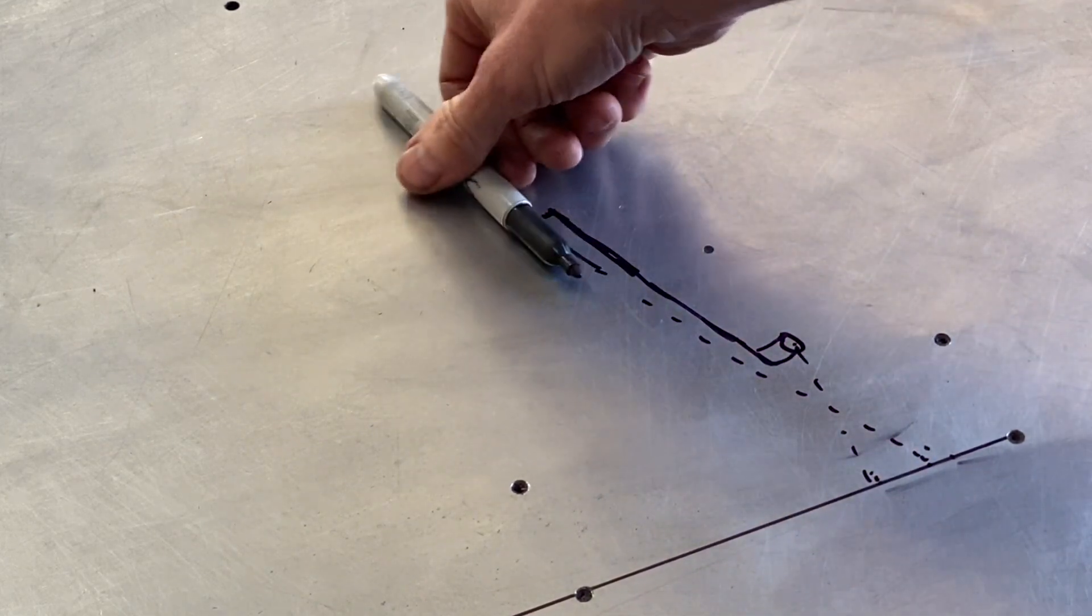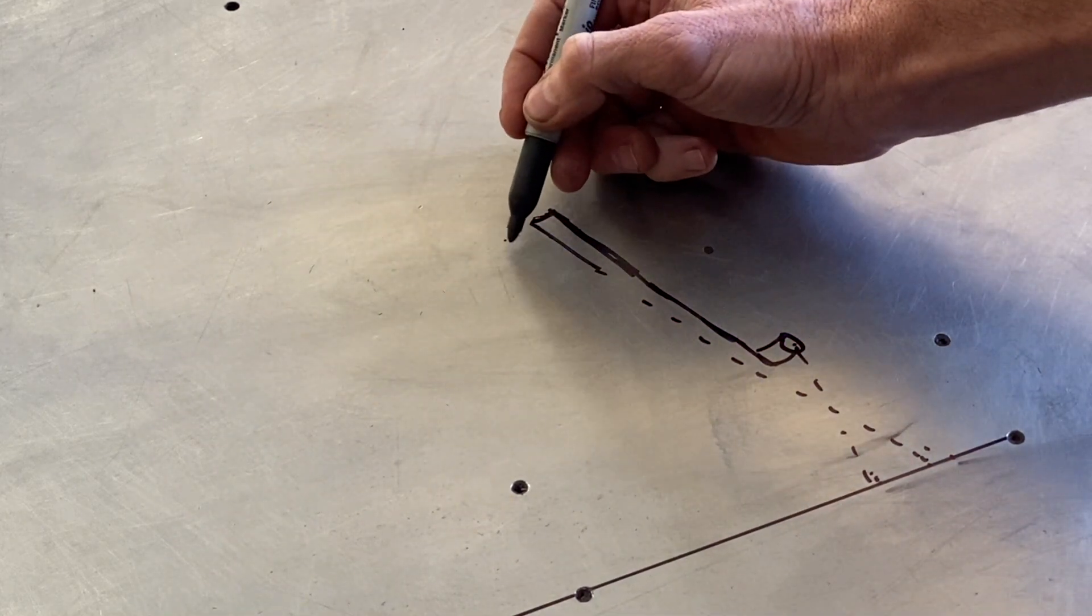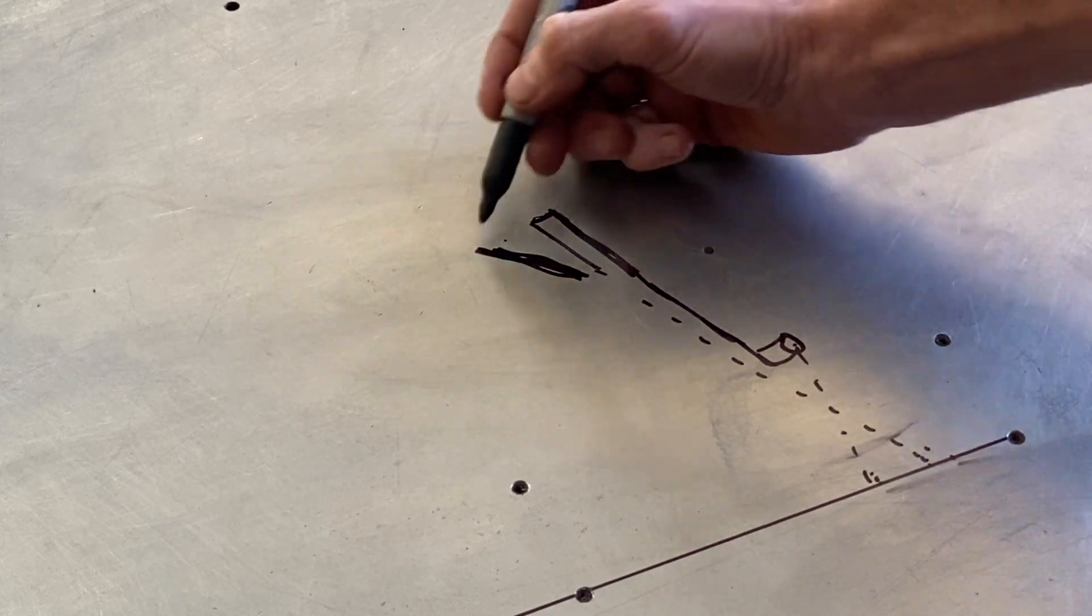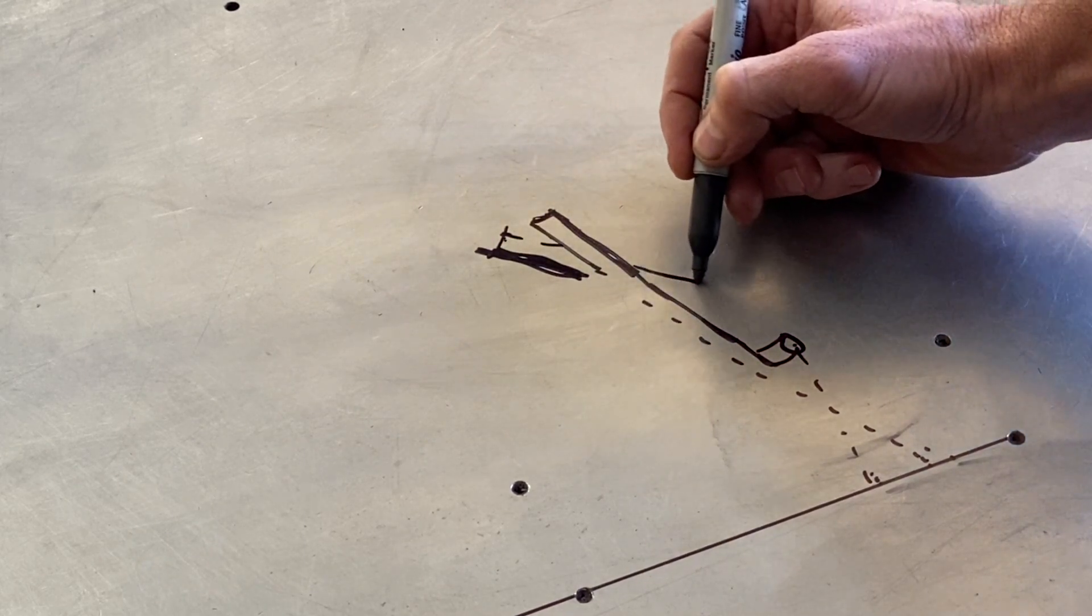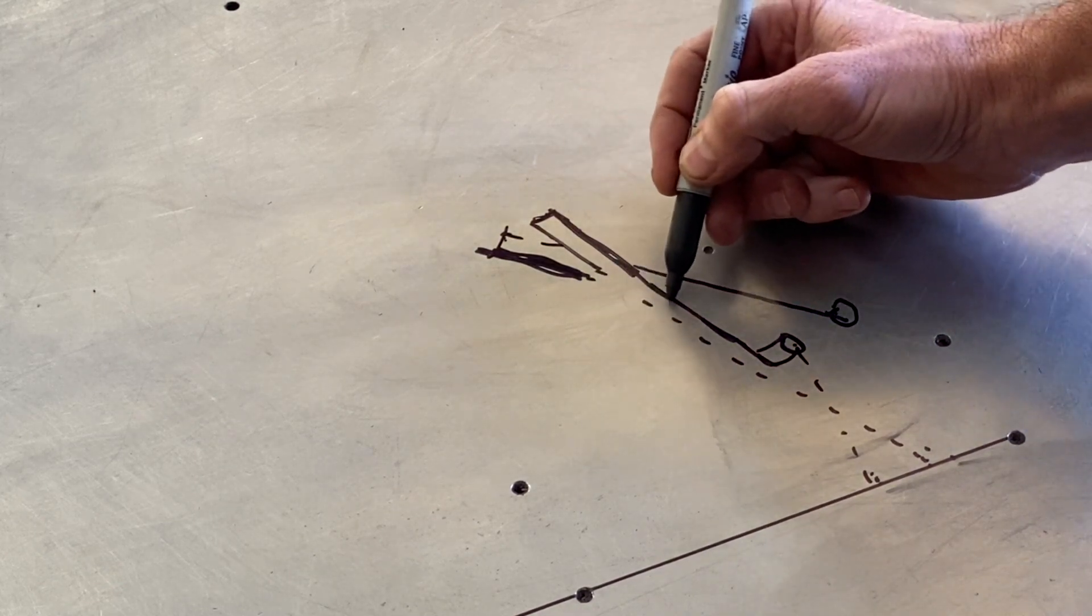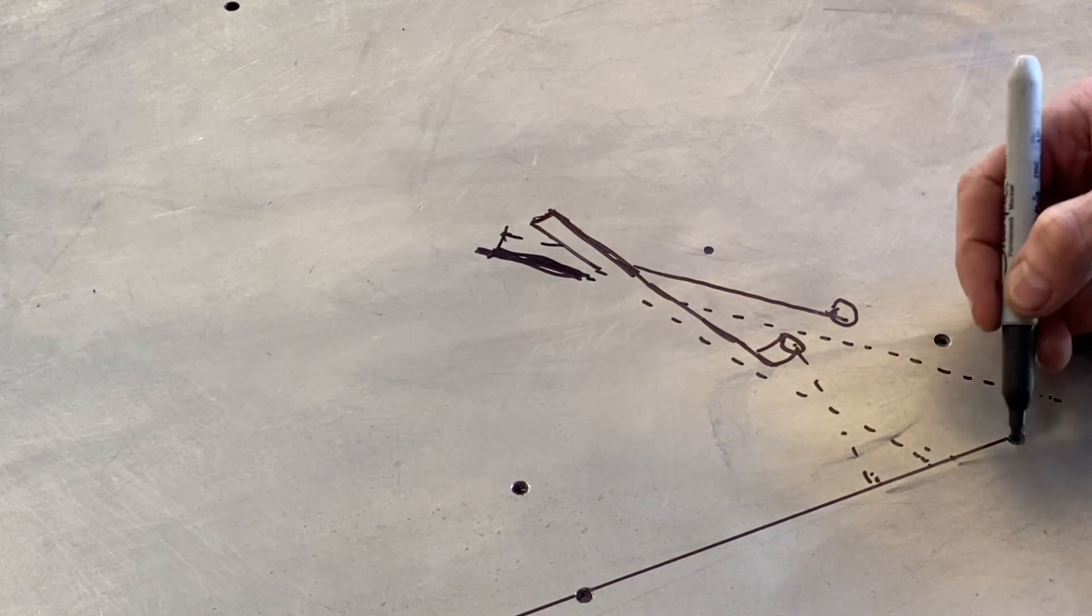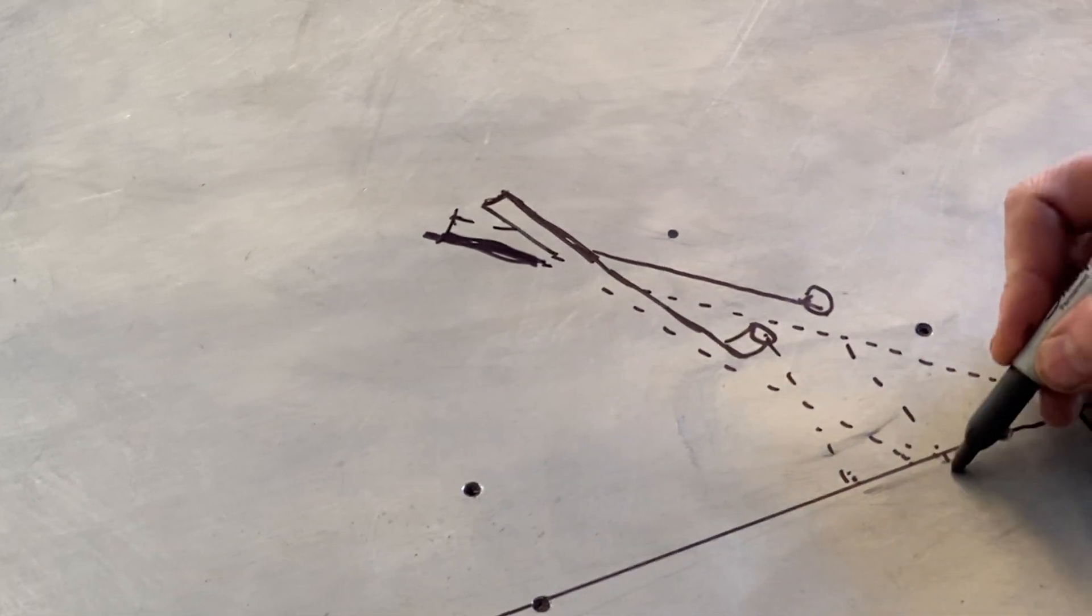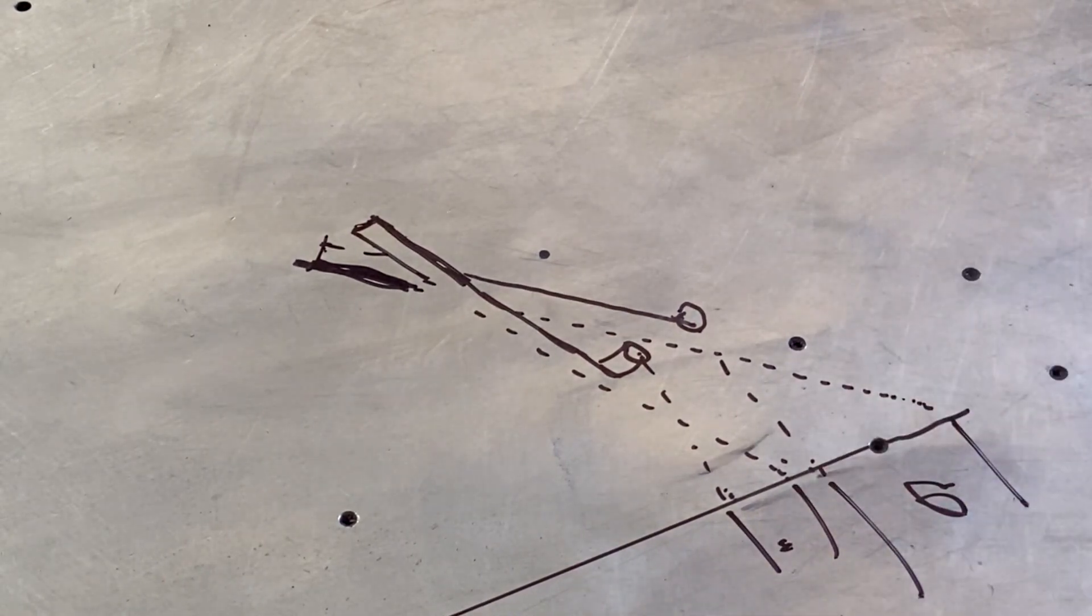You can decrease it or increase it. If you're going to increase the rake, meaning it's going to be more like this in an exaggerated form. Now your forks are, these are your new forks. This is your new rake going down to the ground.